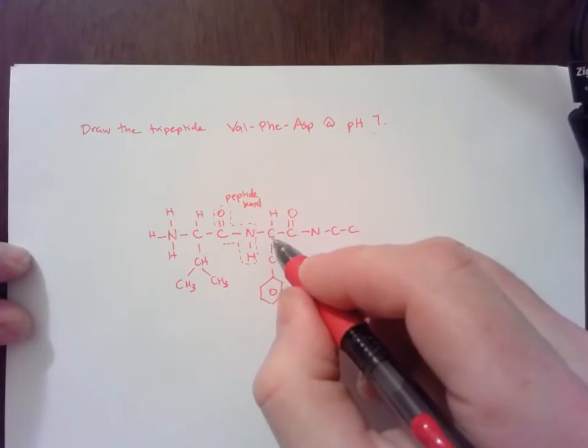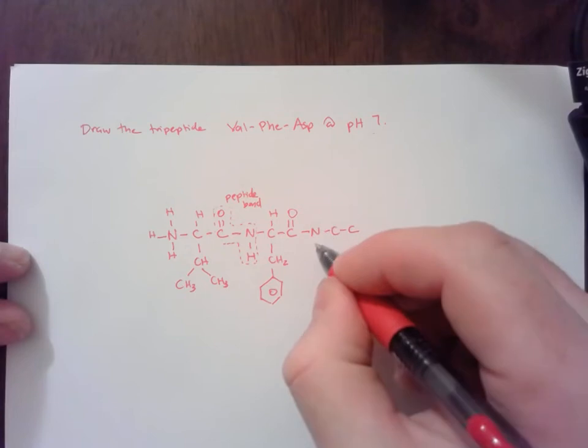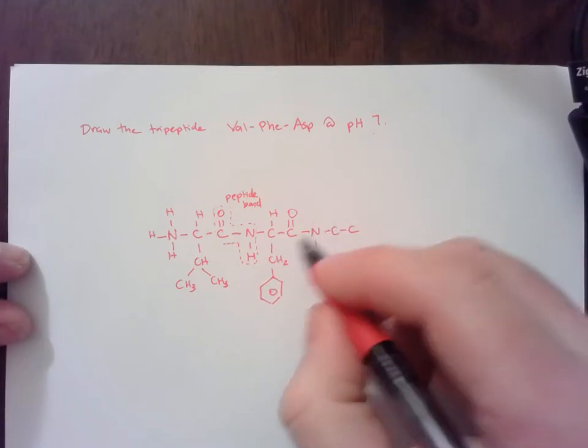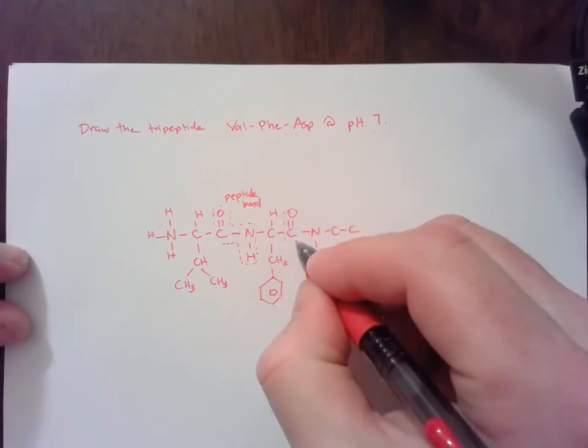NCC, the middle C is always the alpha carbon. The next C over is the carboxylic acid, or where it was. And then followed by the next amino acid, and a second peptide bond.